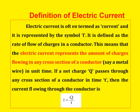Next, the definition of electric current. Electric current, often termed as current, is preceded by the symbol I. It is defined as the rate of flow of charges in a conductor — that is, the amount of charges flowing in any cross section of a conductor. If a net charge Q passes through any cross section of a conductor in time T, then the current flowing through it is I = Q / T. This formula can be used in solved problems.